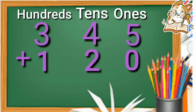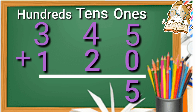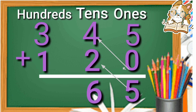First of all we add the ones: five plus zero is equal to five. Then we add the tens: four plus two is equal to six.